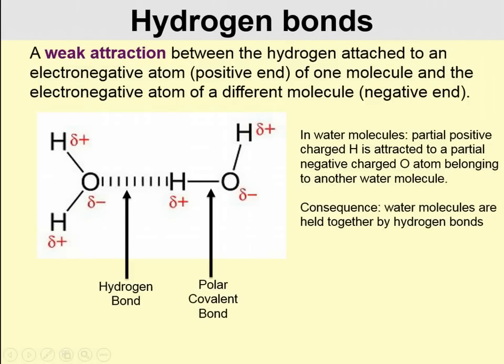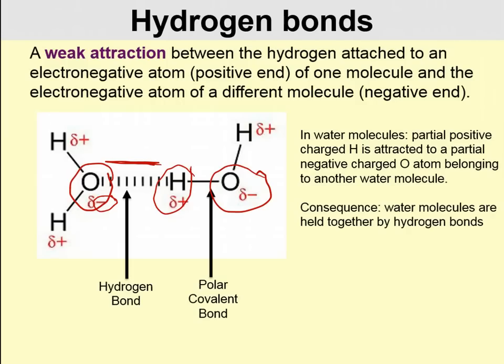Hydrogen bonds are going to be very important to our discussion of biological molecules. A hydrogen bond is an attraction between an electronegative atom connected to a hydrogen on one molecule, and another electronegative element on a different molecule. Here we have oxygen — more electronegative than hydrogen — setting up a partial negative charge on one water molecule, and a partial positive charge on a hydrogen of a separate molecule. This is the hydrogen bond. It's a weak bond, but it is still very important in our discussion of biological molecules.